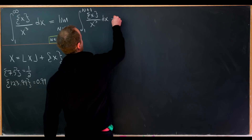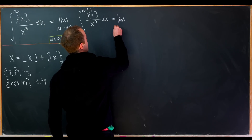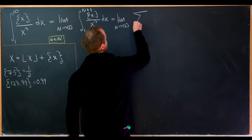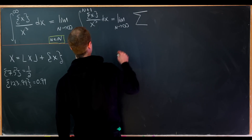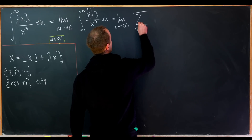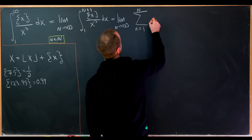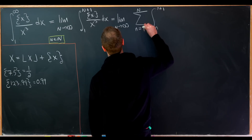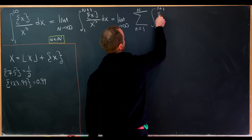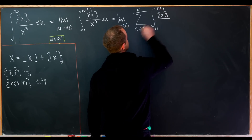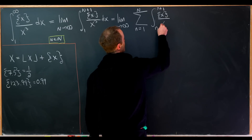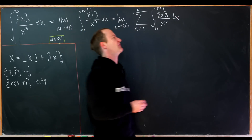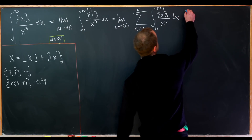In other words, I'll write this as the limit as capital N goes to infinity of the sum of little n going from 1 up to capital N of the integral from little n up to little n+1 of the fractional part of X over X cubed DX. Now let's do a bit of analysis of what's going on here.